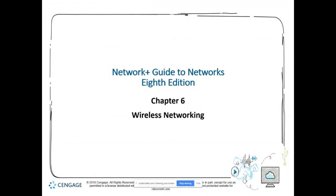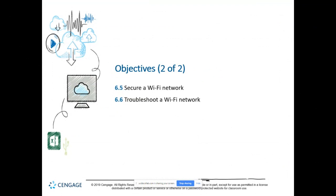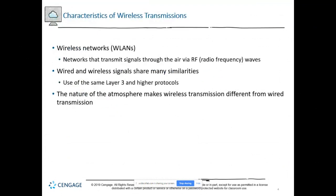We're going over wireless networking, WLANs. Wired and wireless signals share some of the same similarities — they use the same layer three and higher protocols. But layers one and two are going to be different than wired, because there's no wire in a wireless network.